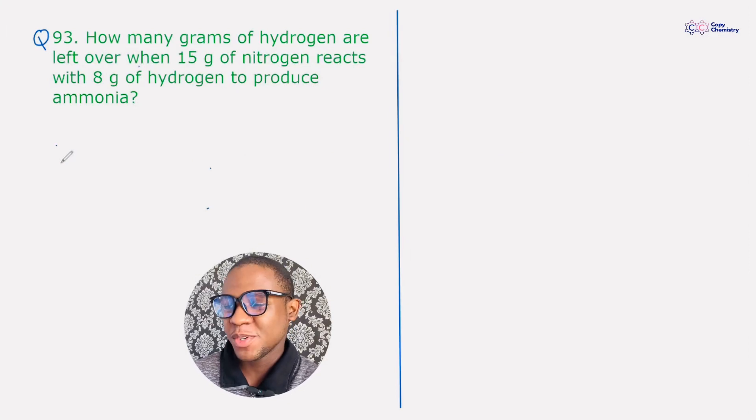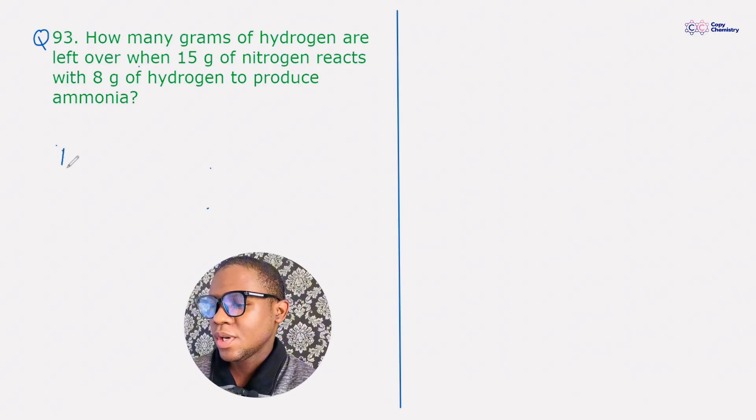Right, so how would you solve this question 93 on stoichiometry? How many grams of hydrogen are left over when 15 grams of nitrogen reacts with 8 grams of hydrogen to produce ammonia? How would you do it? The first thing you are to do here is to write the equation of reaction. So N2, that's nitrogen, plus O2, that's oxygen...